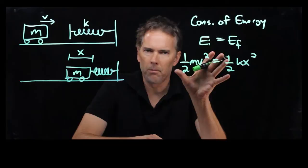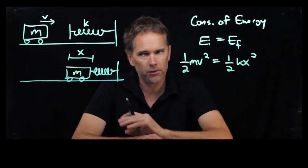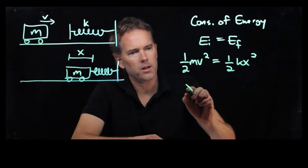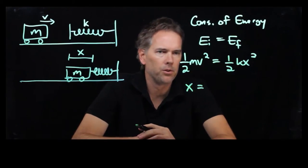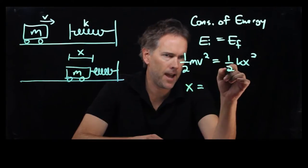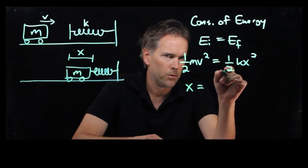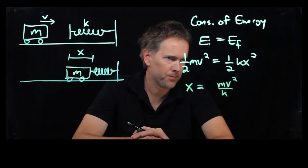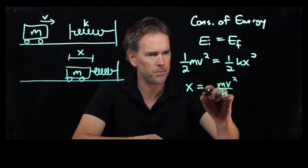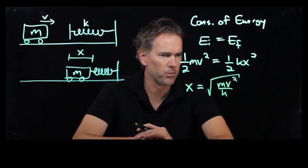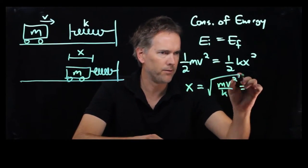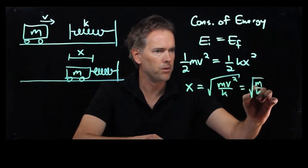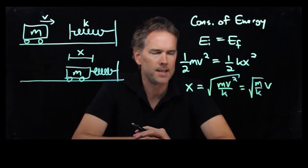And now this is our basic equation. And if we're solving for x in this case, then we can write very quickly x is equal to what? Well we can cross out the half on each side. We've got an mv squared. We're going to divide by k. And then this was an x squared up there. So we need to take the square root of all that. If you have the square root of v squared, that just becomes v. And so we get the square root of m over k times v.